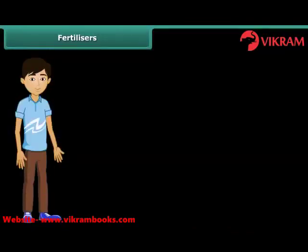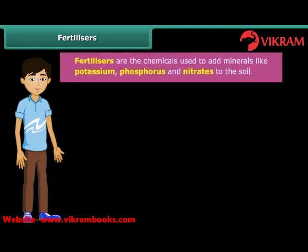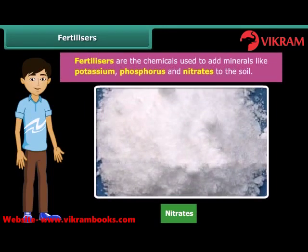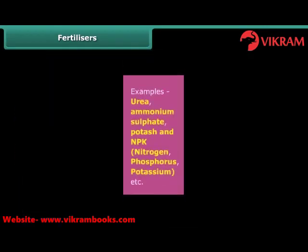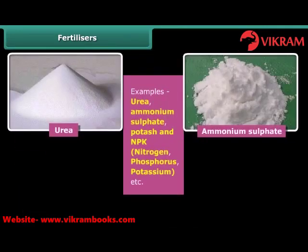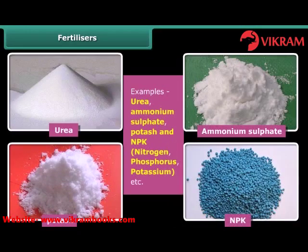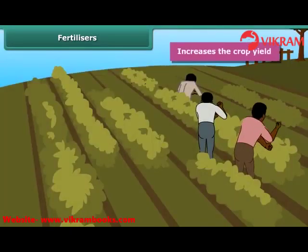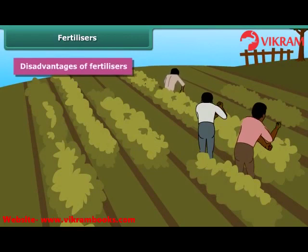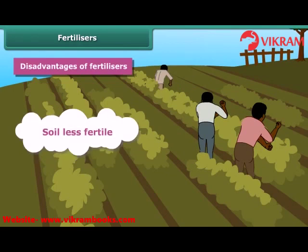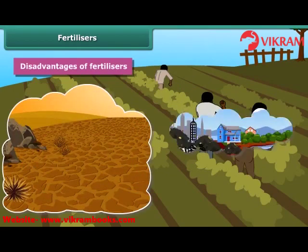Like manure, fertilizers are also used in replenishing the lost nutrients and minerals in the soil. Fertilizers are chemicals used to add minerals like potassium, phosphorus and nitrates to the soil. Fertilizers are produced in factories. Some examples of fertilizers are urea, ammonium sulfate, potash and NPK — nitrogen, phosphorus and potassium. The use of fertilizers increases the crop yield. However, there are some disadvantages: excessive use of fertilizers makes the soil less fertile, and they have also become a source of water pollution.